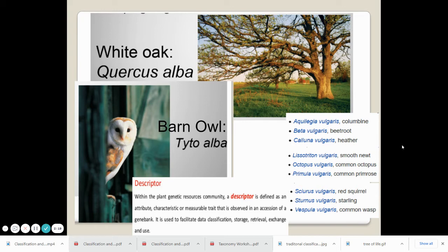Another example here of organisms that are different organisms, but they have the same species descriptor, which this one seems a little bit negative there. It's vulgaris.